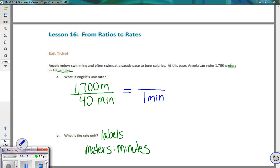So it's the same as saying, look, we're going to make an equivalent ratio. 40 divided by 40 is 1. 1,700 divided by 40 will give us our missing number that we need here. So let's go ahead and work out that problem: 1,700 divided by 40.